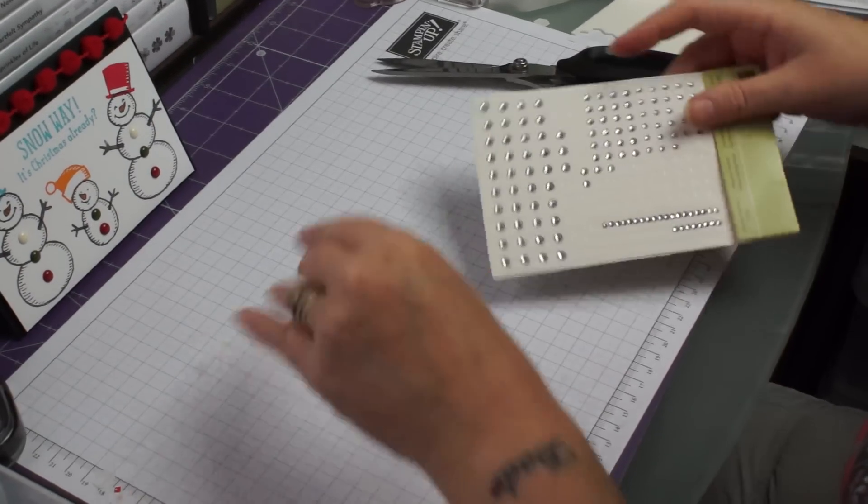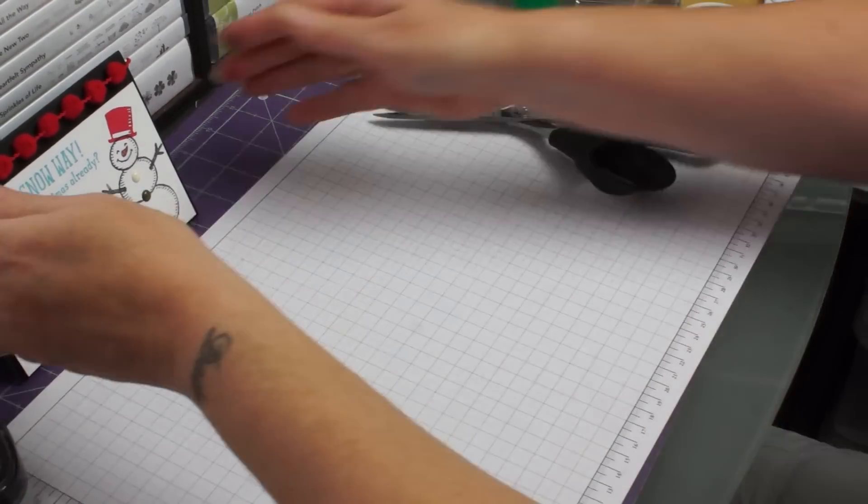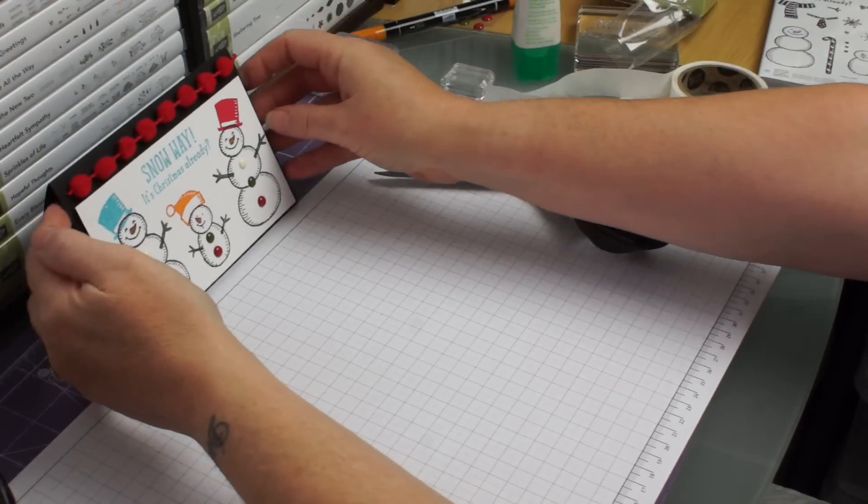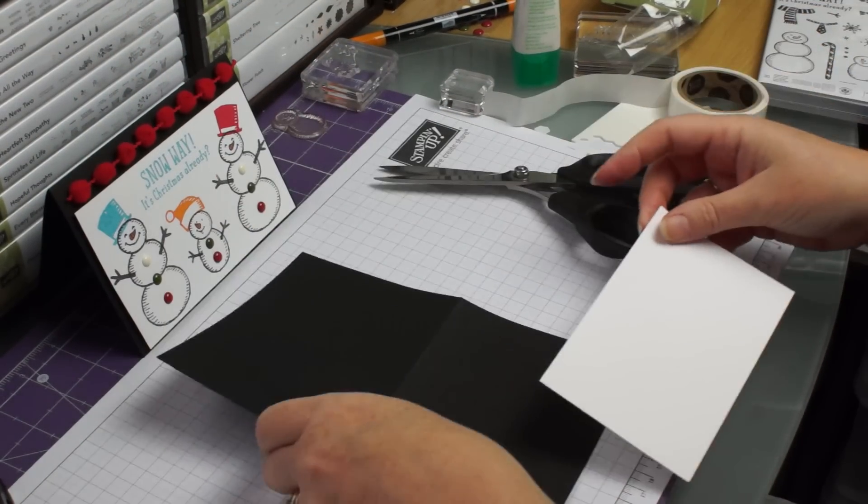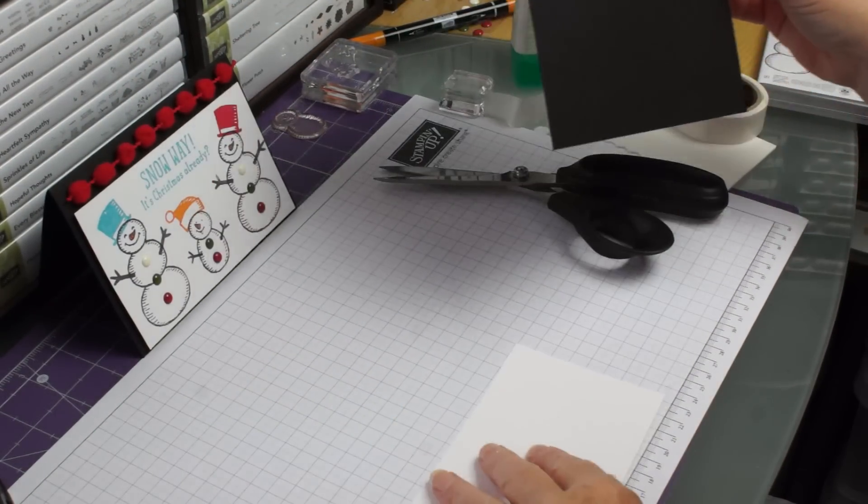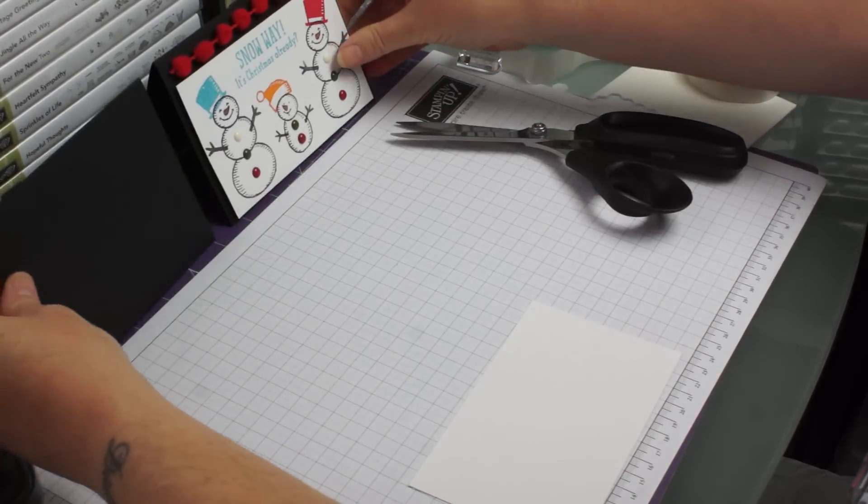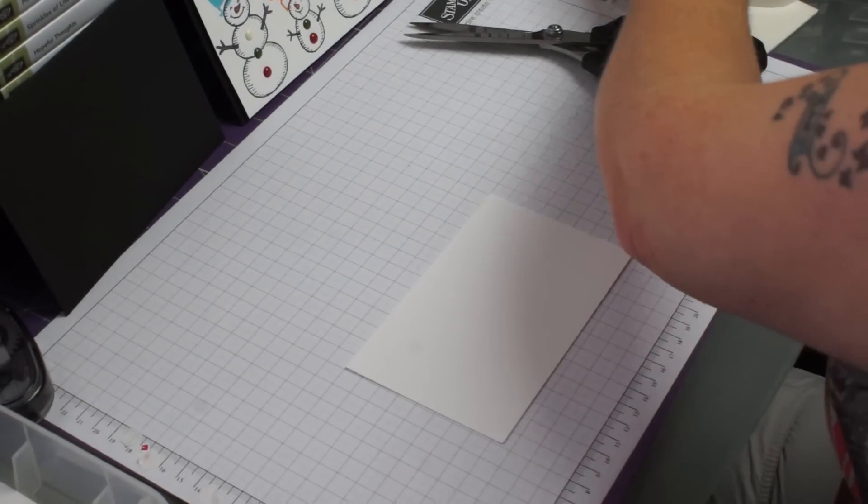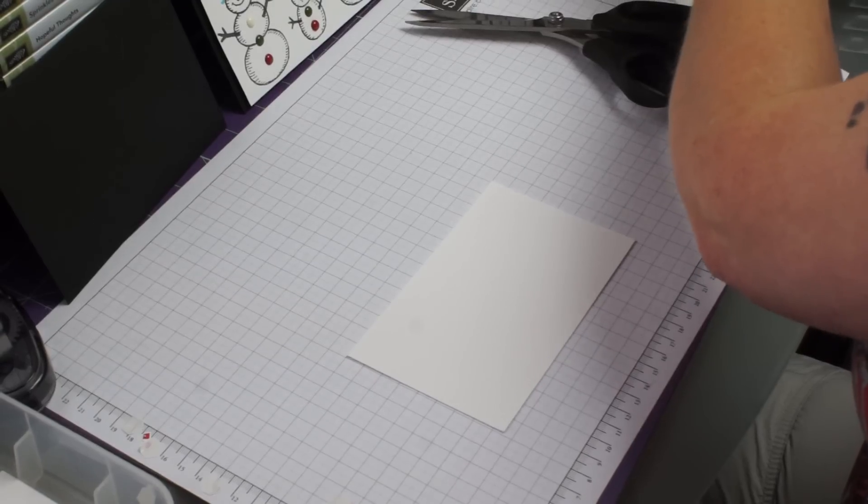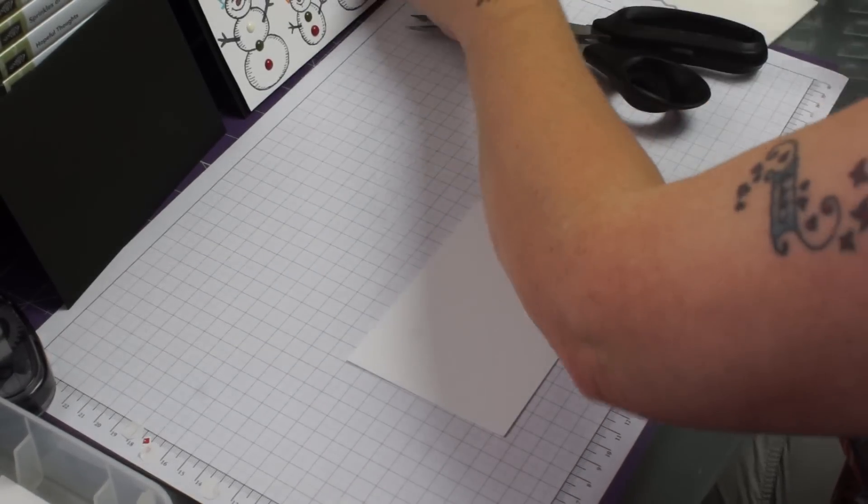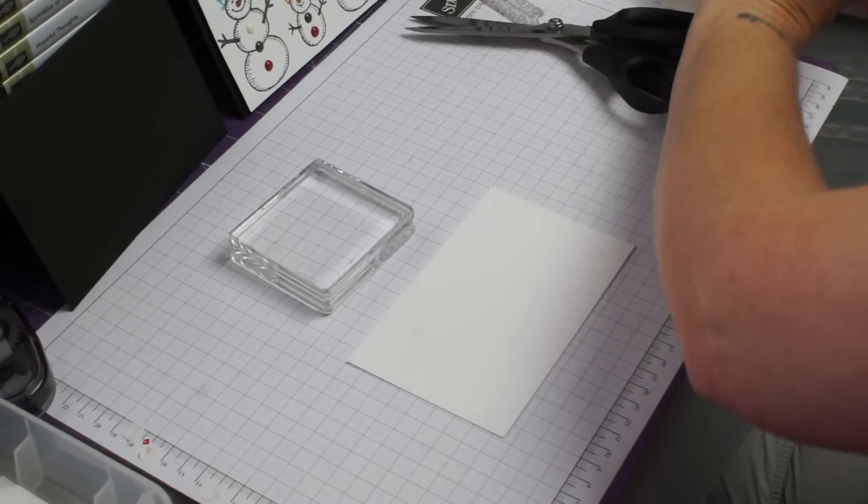Now if you don't have any framelits don't panic, because we're going to make this one. And again the dimensions of the card will be on my blog. Just an A6 basic black card and a piece of whisper white. And then we're going to get our block and our large snow person.